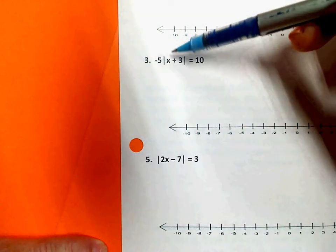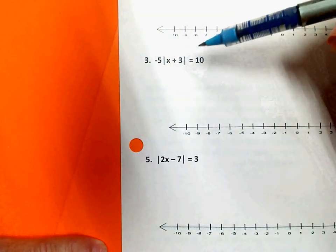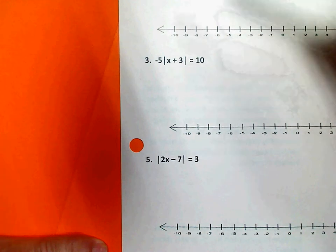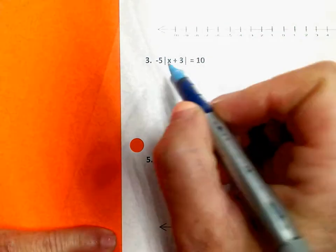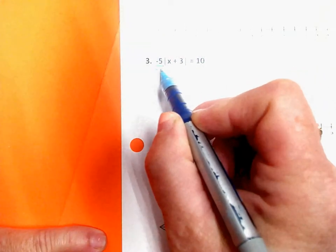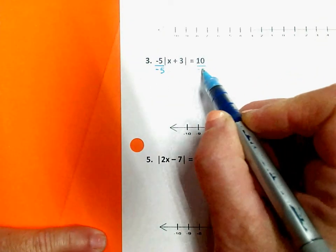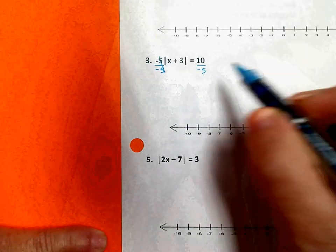You cannot distribute into a set of absolute value bars. They are not parentheses. So since this negative 5 is multiplying the absolute value, the opposite of multiply by negative 5 is divide by negative 5. So that's what I'll do to get rid of the negative 5.